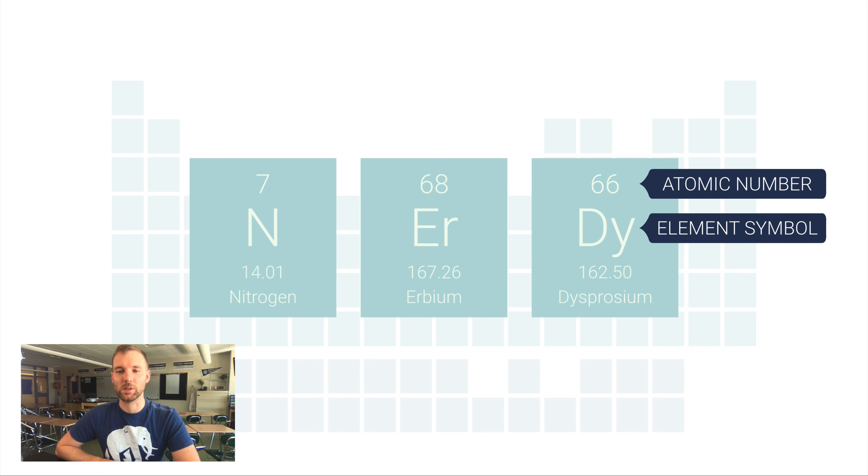Another thing that will be on the periodic table is what we call the element symbol, which is just the one, two, or three letter abbreviation of the element. One major thing to note here is that the first letter of every element symbol is capitalized—it's got to be capitalized. Any remaining letters, if there's more than one letter, will be lowercase.